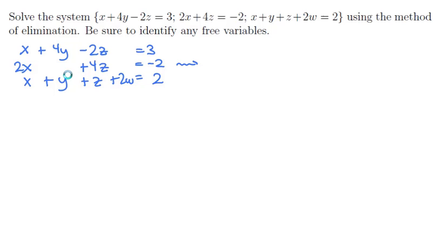We can solve this by converting it into a matrix in row echelon form. The first column would be 1, 2, 1, the second column would be 4, 0, 1, then negative 2, 4, 1, and then 0, 0, 2, and then the final column would be 3, minus 2, 2. So this is the augmented matrix that represents the system.